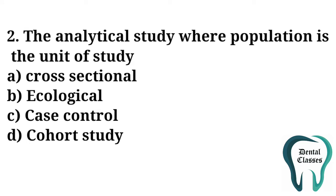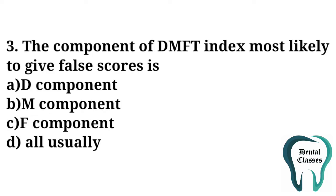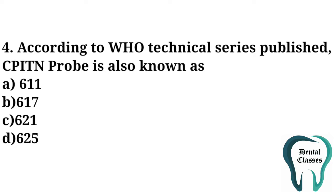The answer is B — ecological study. The component of DMFT index most likely to give false scores is — the answer is B — M component. According to WHO Technical Series published, the CPITN probe is also known as the answer is C — 621.